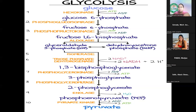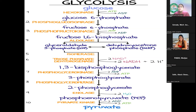Through the action of hexokinase, glucose becomes glucose-6-phosphate — that's the addition of a phosphate. Then phosphoglucose isomerase converts glucose-6-phosphate into fructose-6-phosphate. Another phosphate is added by phosphofructokinase, making it fructose-1,6-bisphosphate.